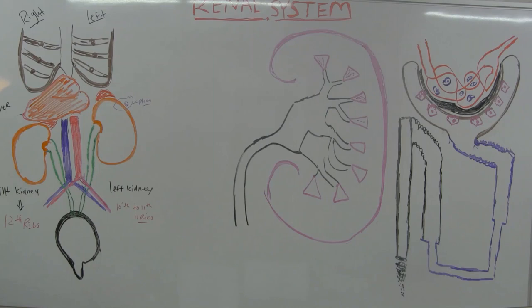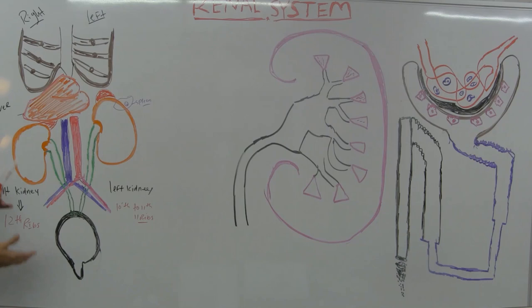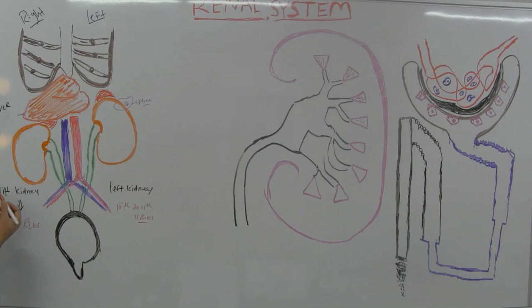These kidneys are located posteriorly, so when you examine them you have to look at the posterior/back to see them. The kidney is a two bean-shaped structure, usually about 10 centimeters in length and 5 centimeters wide — a very small size. The upper area of the kidney we call the superior margin or superior surface.